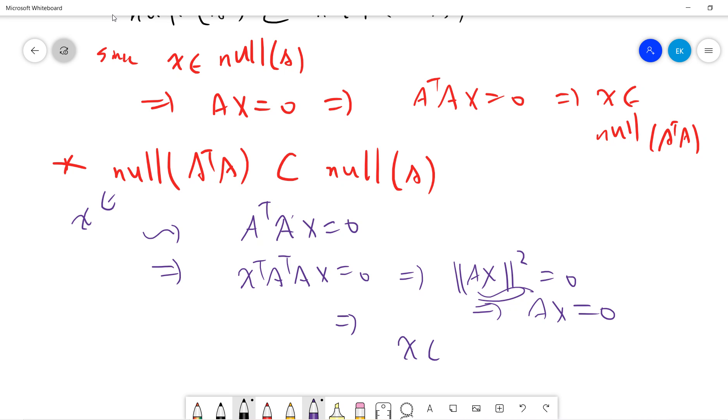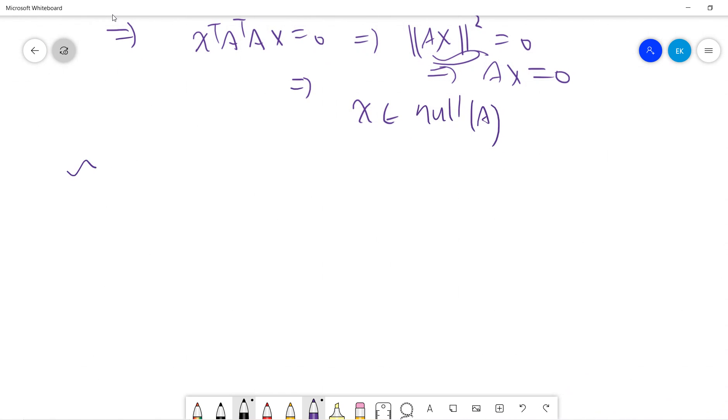Therefore X belongs to null A. So the dimension of null A is the same as the dimension of null A^T A since they are the same space. Thus, rank A equals rank A^T A.